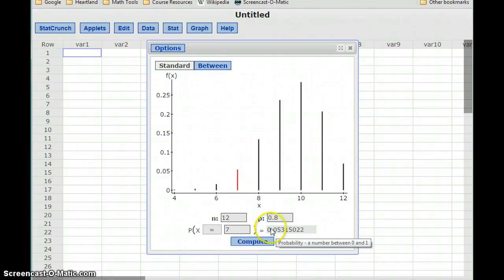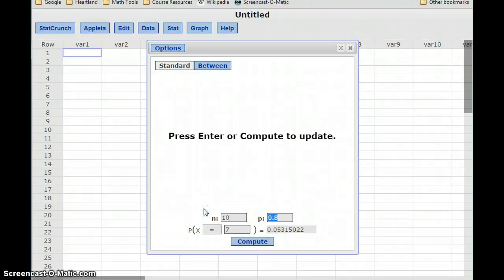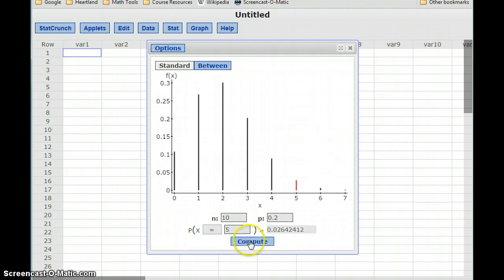In example three, part A, now we have 10 trials and a probability of success of 20 percent. We want to find the probability that X is exactly five. It turns out to be just a little over two percent.